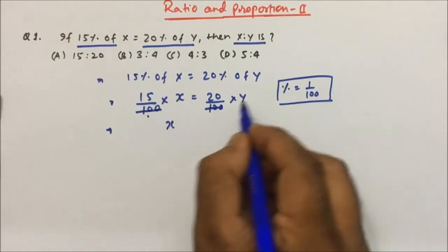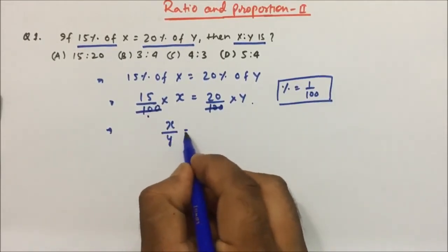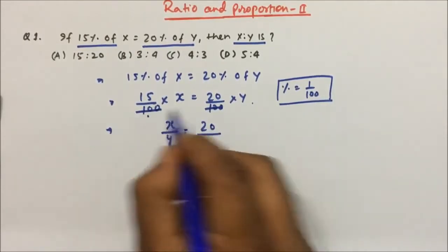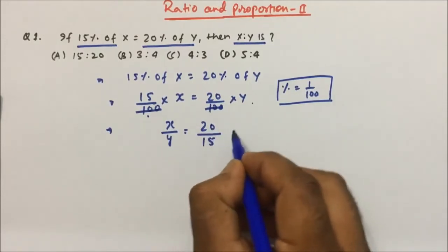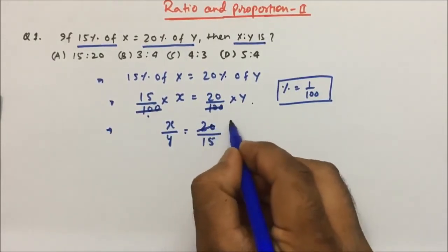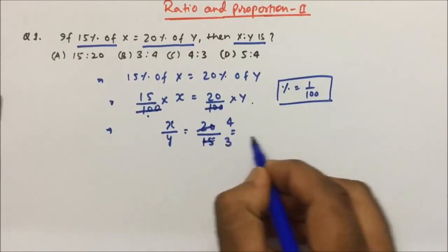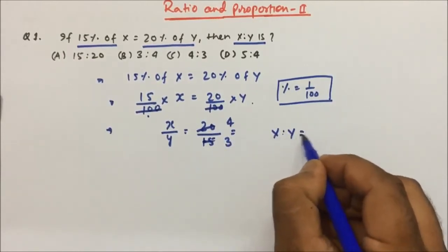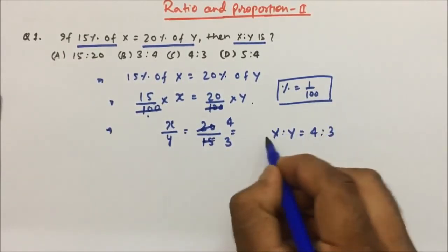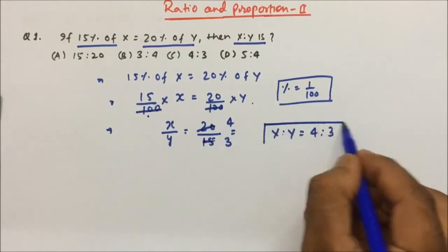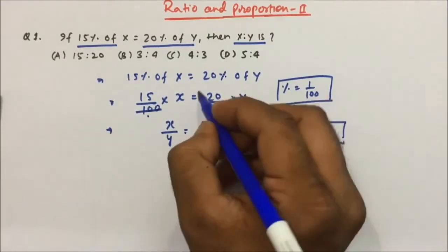Now x and y I will bring to that side, and 20 and 15 to the other side. Simplifying by 5, we get 4 and 3. So x to y ratio will be 4 is to 3. The option will be option C.